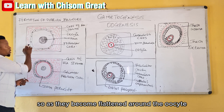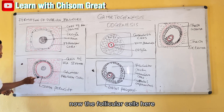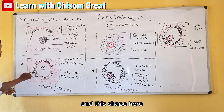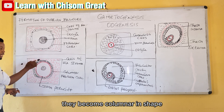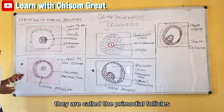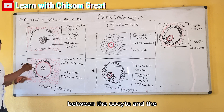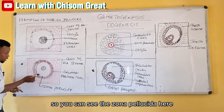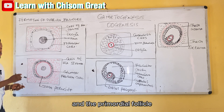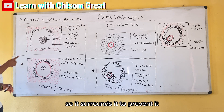The follicle cells become columnar in shape, and at this stage they are called the primordial follicle. You can notice the difference between the earlier flattened cells and this columnar shape. The zona pellucida comes to lie between the oocyte and the primordial follicle — you can see the zona pellucida here surrounding the oocyte. The zona pellucida prevents the oocyte from getting fertilized prematurely.